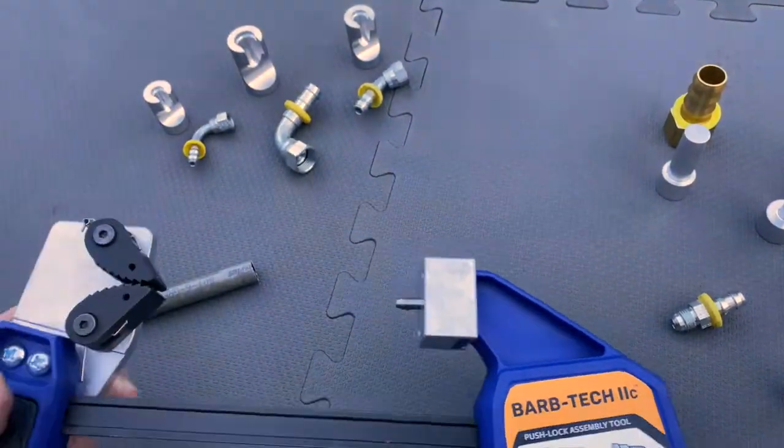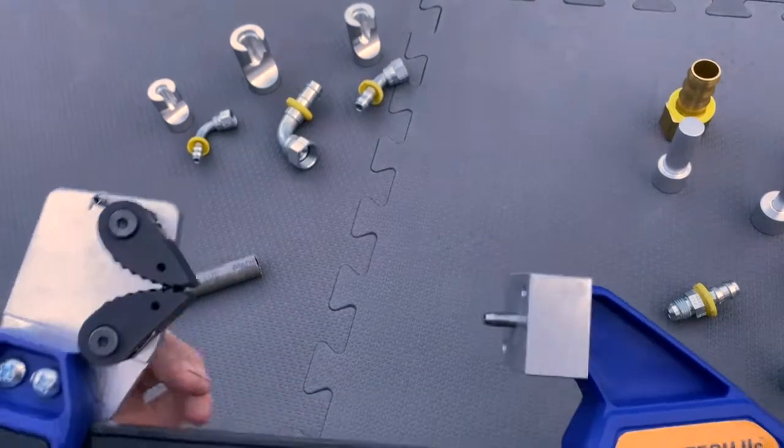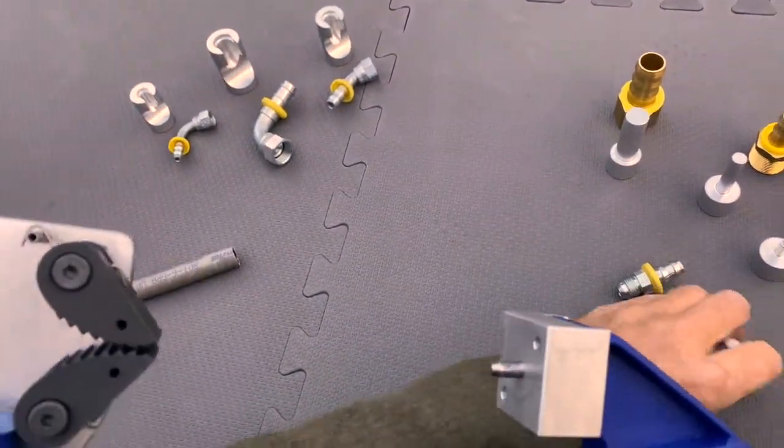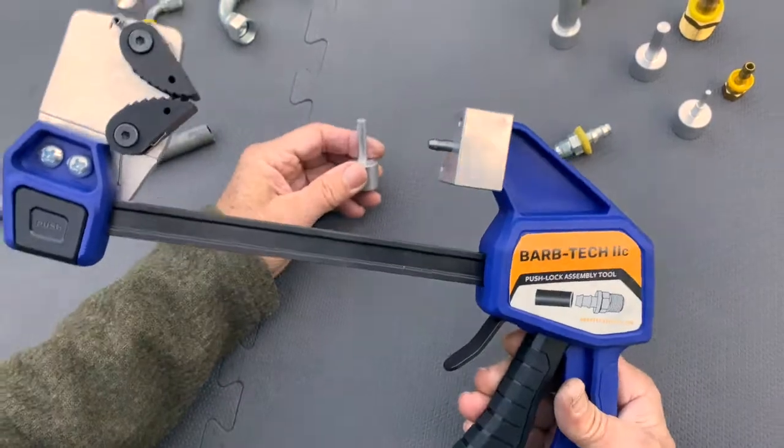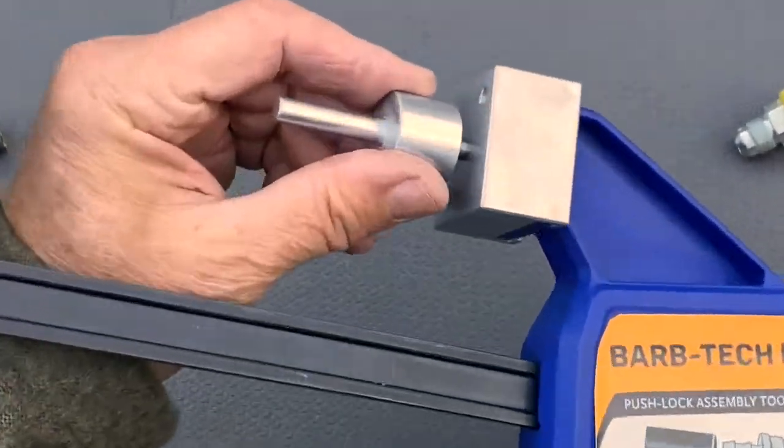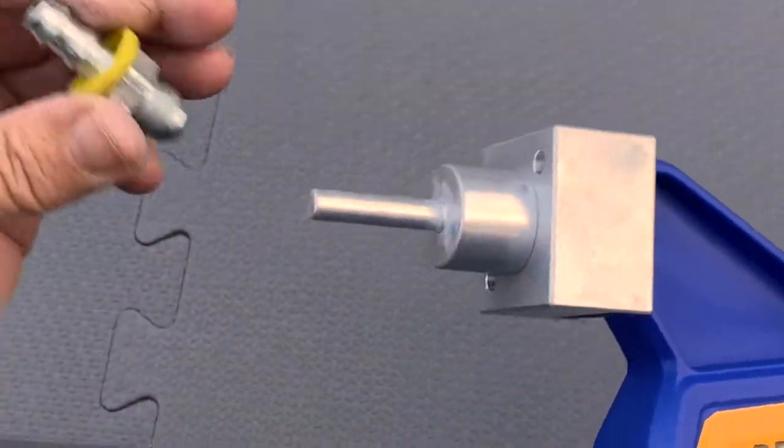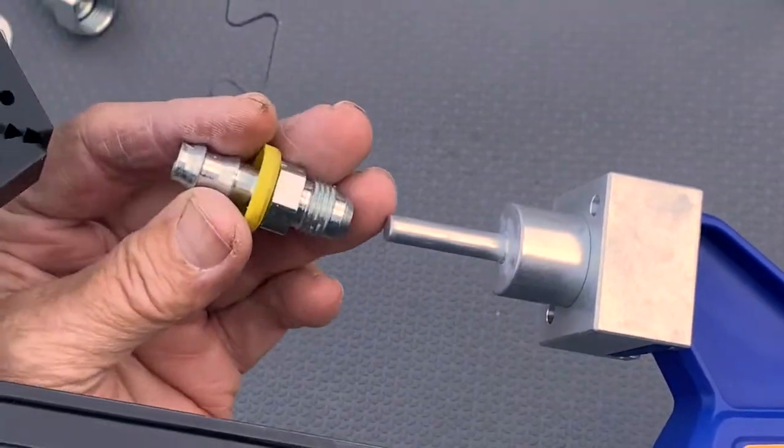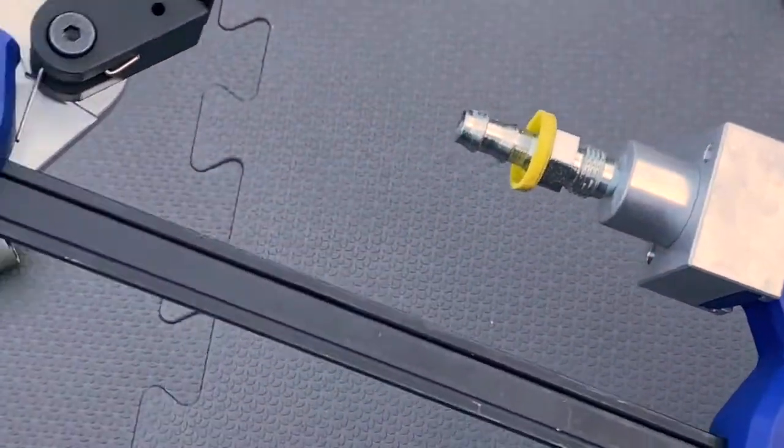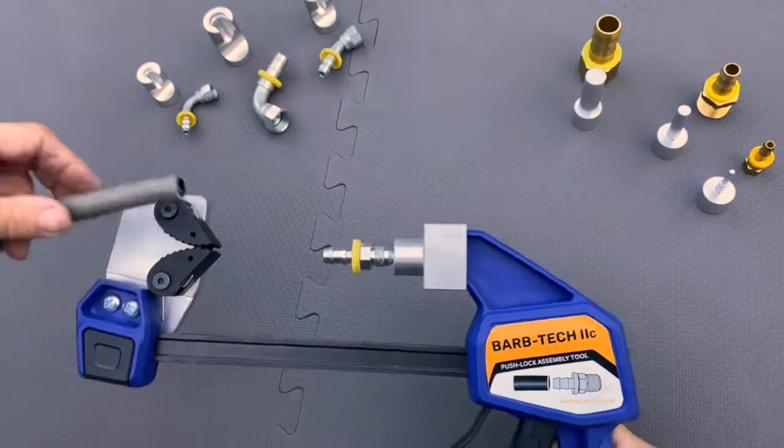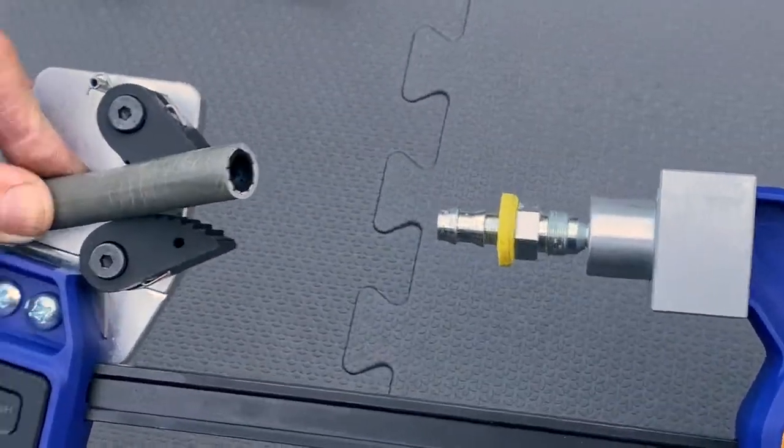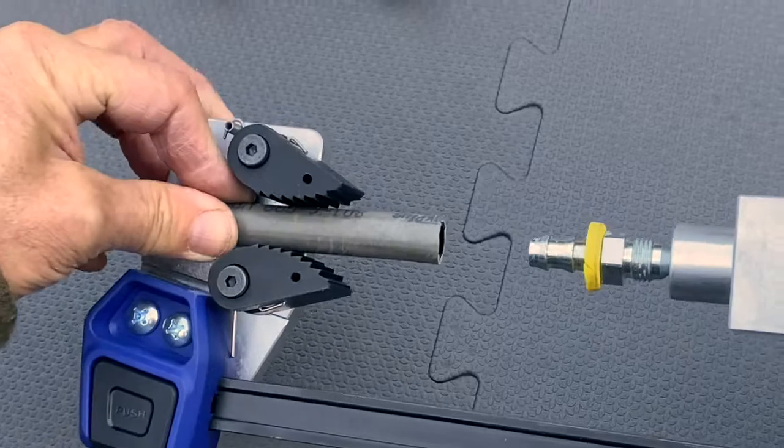I'm just going to use a three eighths mandrel and handle, and a standard JIC by barb fitting. This is a standard three eighths 801 air hose.